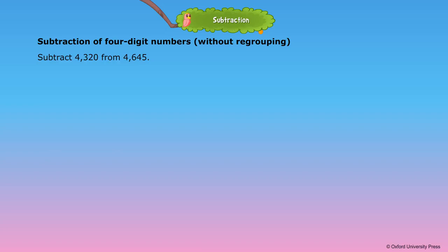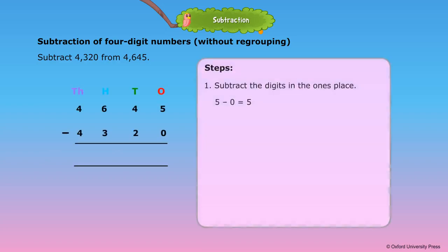Subtraction of 4-digit numbers without regrouping. Subtract 4,320 from 4,645. Step 1: Subtract the digits in the ones place. 5 minus 0 is equal to 5. Step 2: Subtract the digits in the tens place. 4 minus 2 is equal to 2.